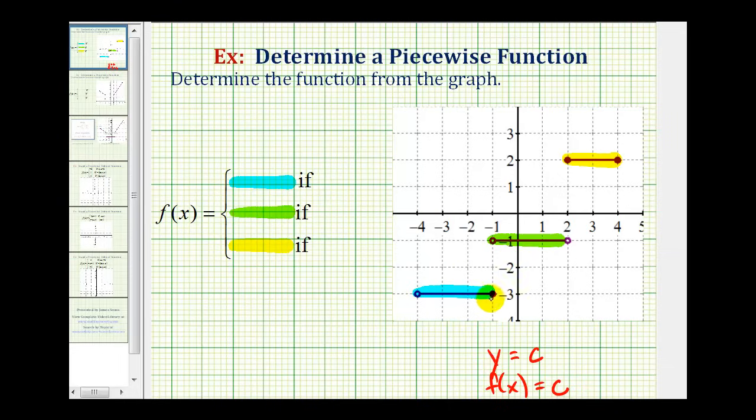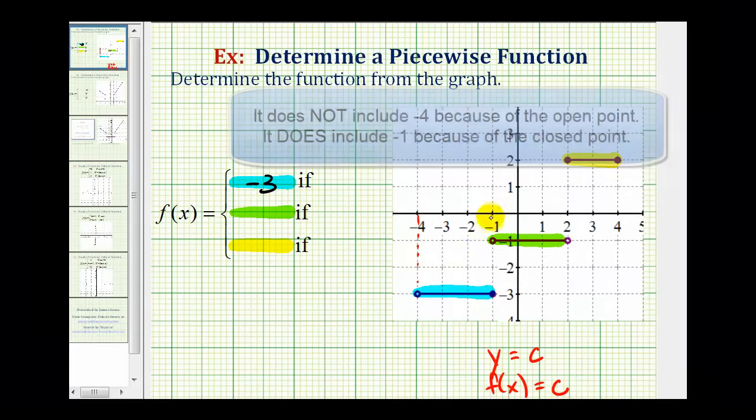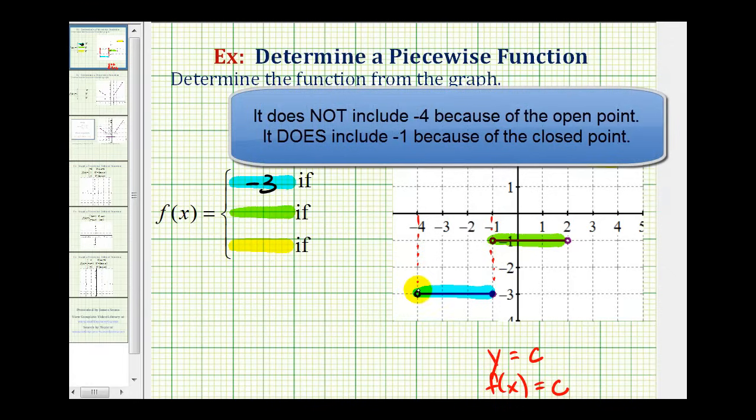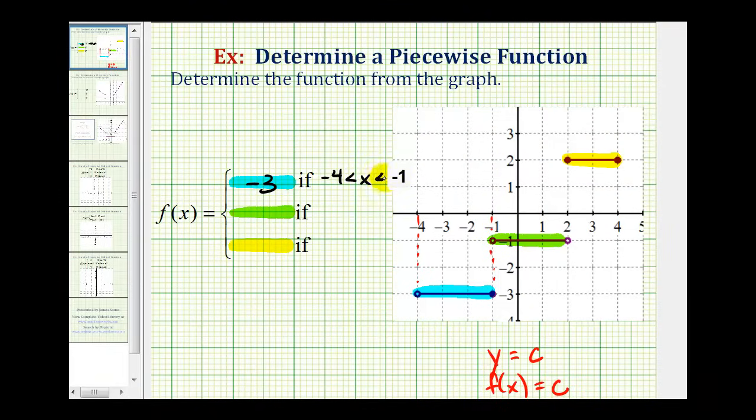So if we start with this blue piece, notice that we would have the equation y equals negative three, or in this case, f of x equals negative three. But notice this is only true on the interval between negative four and negative one, where it does not include negative four, but it does include negative one. So f of x equals negative three if x is greater than negative four and less than or equal to negative one. This would be the domain or the interval for x when f of x equals negative three.